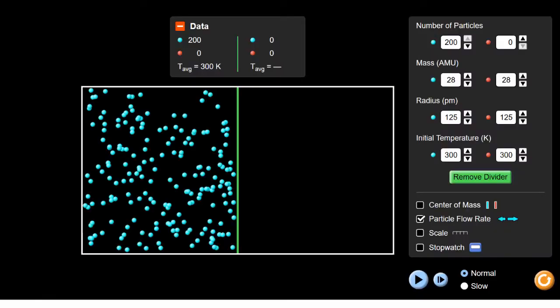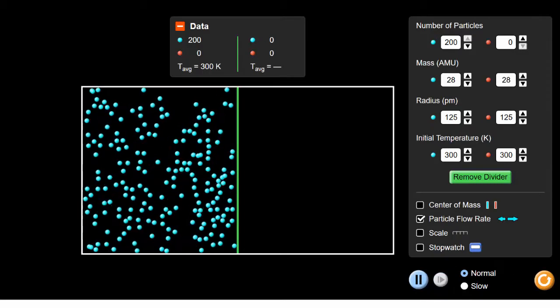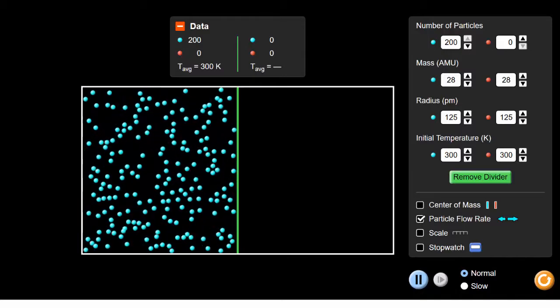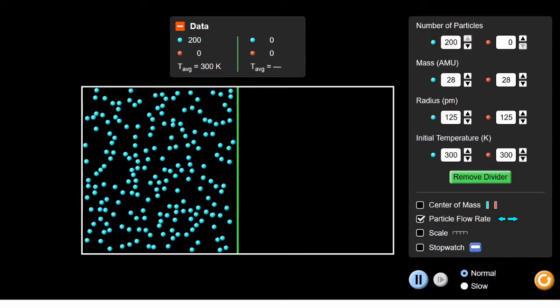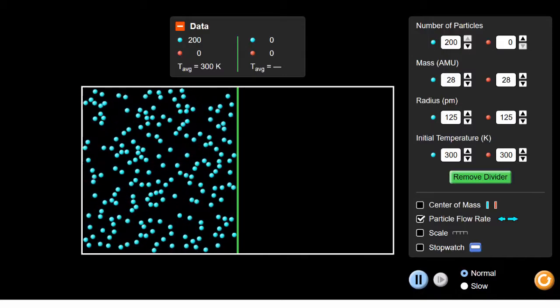You start off with a population of particles contained on the left-hand side of a divider. The particles are all moving around randomly, bumping into one another. Notice that when they collide they change direction, like billiard balls.